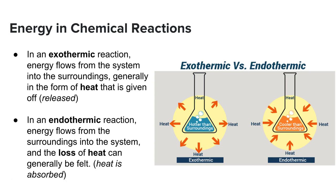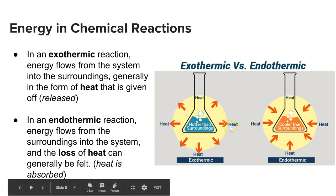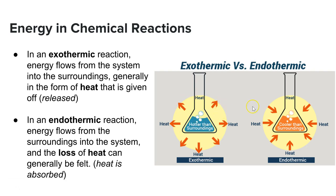Exothermic reactions is where energy flows from the system into the surroundings, generally given off in the form of heat. So you can feel the heat coming out from the system. That's called exothermic. Think of it as the heat is exiting the system. So you can see the heat coming out. It means that the inside is hotter than the surroundings and heat is being released.